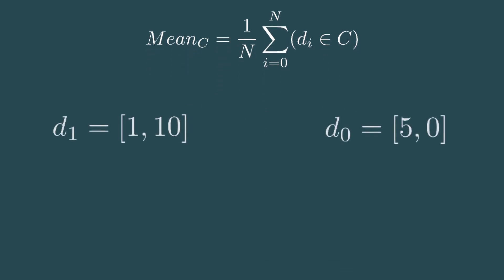For example, a class with two data points consisting of two features. The first data point is the vector 1, 10 and the second data point is the vector 5, 0. Now we add up both data points and divide by 2, which is the number of data points in the class. The result is the average data point consisting of the vector 3, 5.